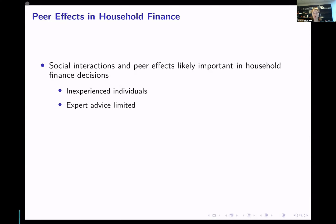These are things people just don't do on a day-to-day basis. When they start looking into how to buy a house, how to finance it, what type of mortgage to get, how much to put down — these are new decisions to many individuals and they're likely to look to family and friends for advice. It's also an area where expert advice is somewhat limited, especially advice that people trust. Financial advisors, banks, and mortgage brokers exist, but individuals often don't fully trust that they'll give objective advice. So advice from family and friends is something people often feel more comfortable with, and we think peer effects play a very important role in how people come up with these decisions.